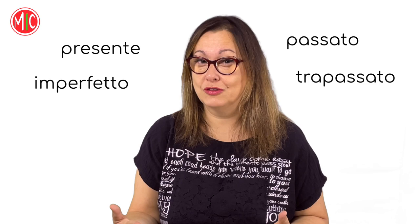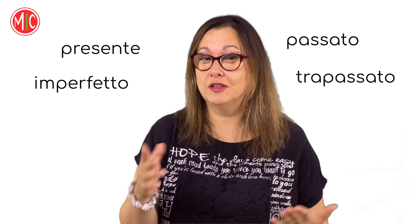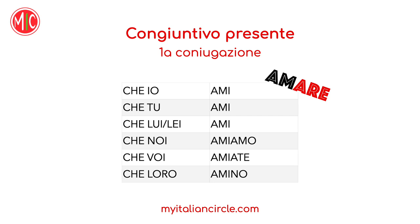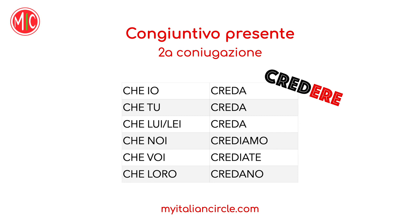Before we go on, let's see how to form the present subjunctive. Prima coniugazione: che io ami, che tu ami, che lui/lei ami, che noi amiamo, che voi amiate, che loro amino. Seconda coniugazione: che io creda, che tu creda, che noi crediamo, che voi crediate, che loro credano. Terza coniugazione: che io senta, che tu senta, che lui/lei senta, che noi sentiamo, che voi sentiate, che loro sentano.